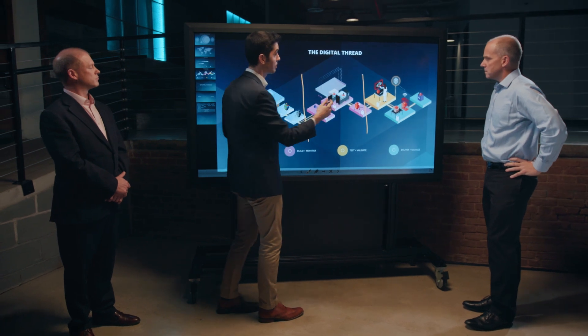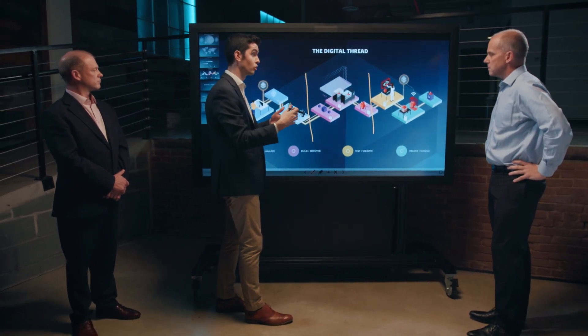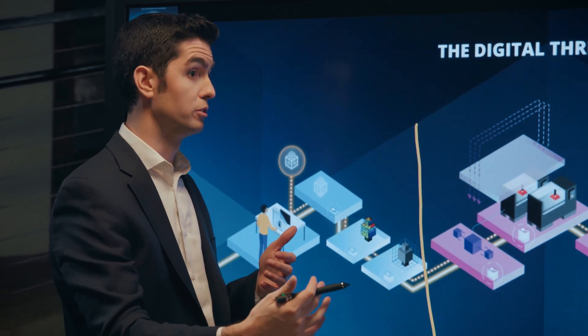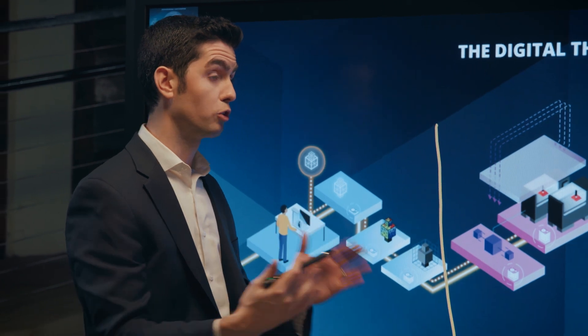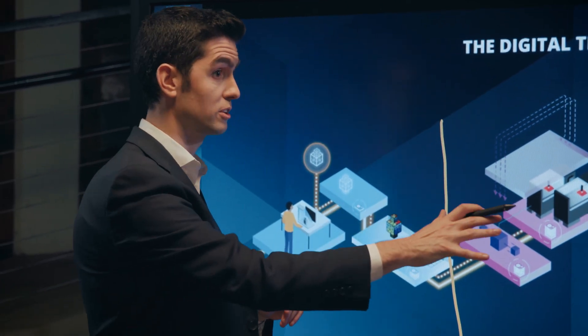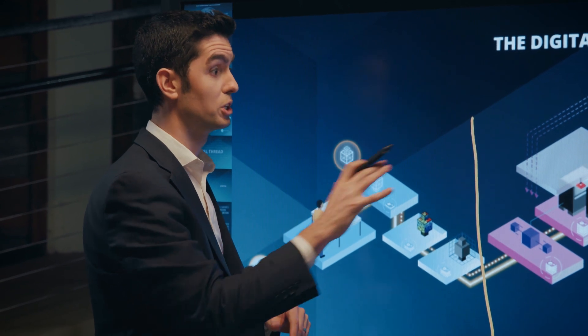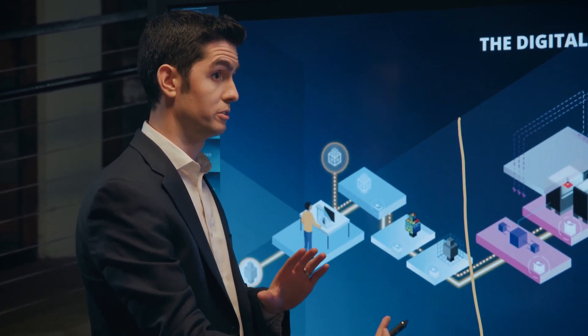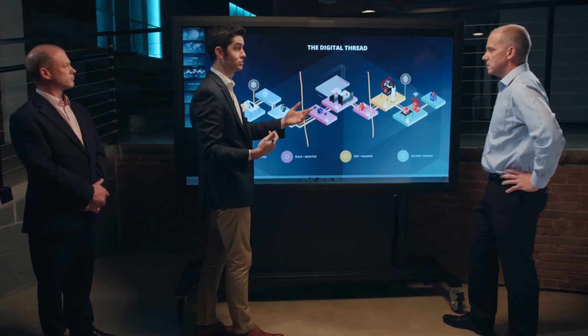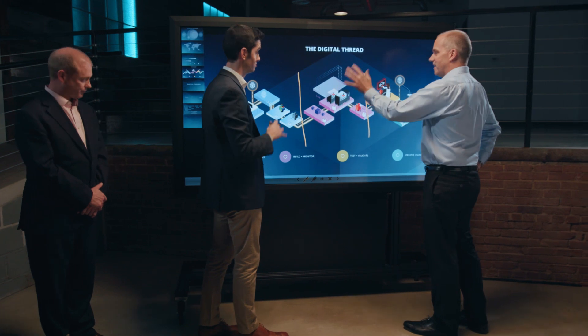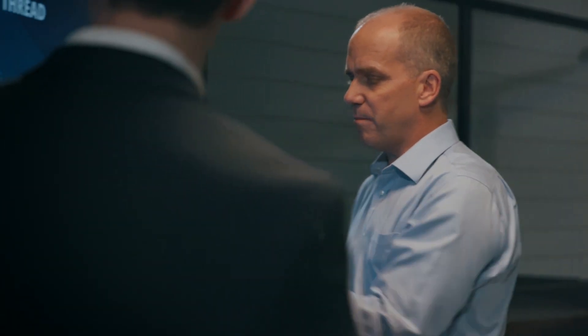Once you actually field the part, how can you continue to learn from it as it's out in the field? Performance data and usage data are collected — how can we understand the performance conditions the part is being subjected to and help inform an even better design in the future? We call that an as-maintained model of the part. So you actually keep a live digital representation of that physical part in the landing gear assembly — as-designed, as-manufactured, and as-maintained. Two other concepts I've heard quite a bit about: the body of knowledge and feedback. What's the story there?